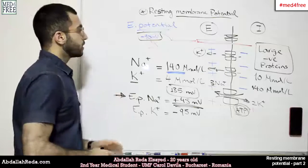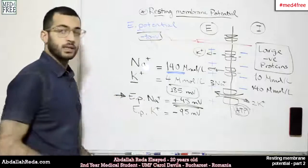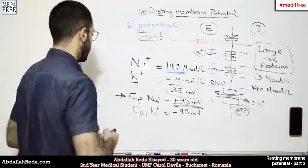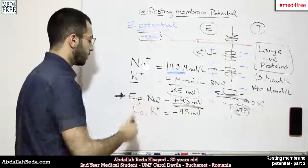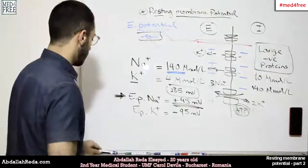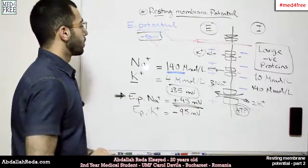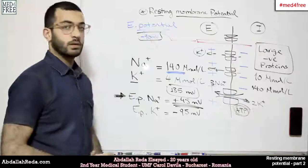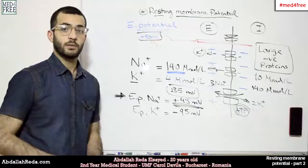That was the resting membrane potential. These are the two ions that affect this potential very much. We also have calcium, but these are the two main ions in most cells. I hope that was clear. Next time we'll talk about the action potential. Thank you for watching, and see you.